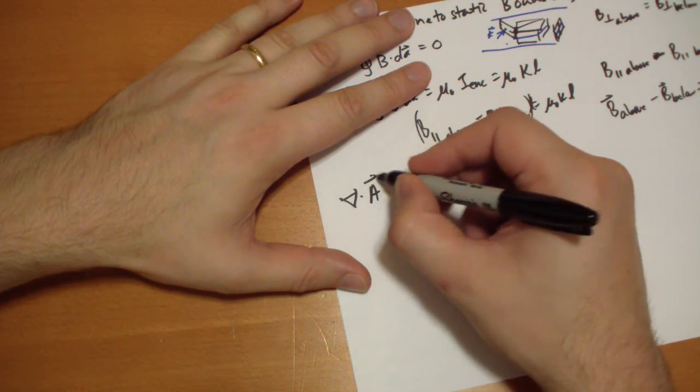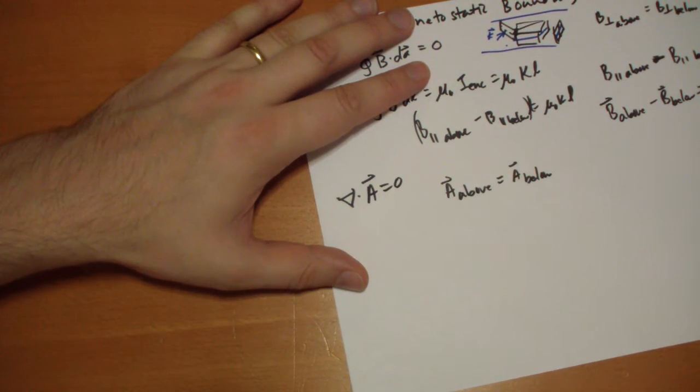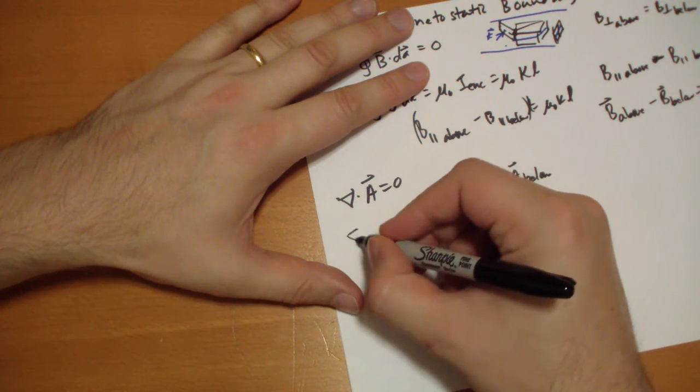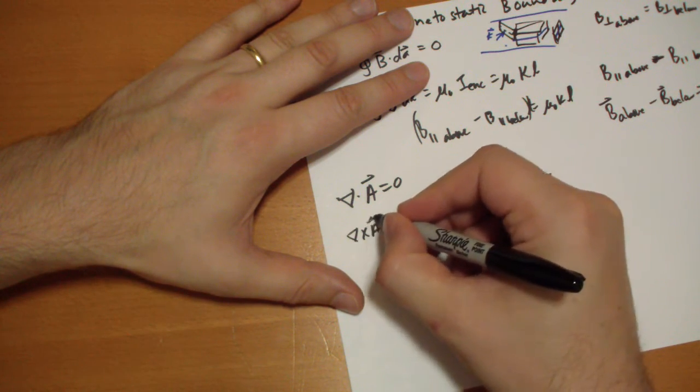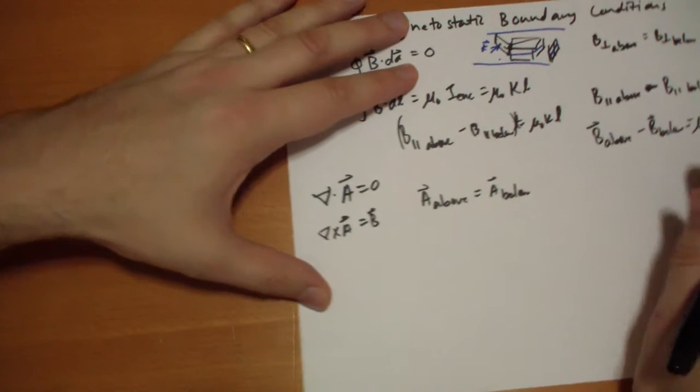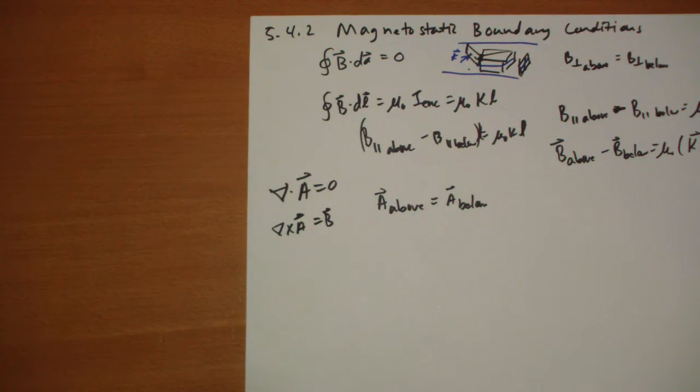So the reason why is the divergence of A is zero by choice, and the curl of A is equal to the B vector. And when you cross that boundary, the tangential components have to be continuous. They can't shift because of the curl there.